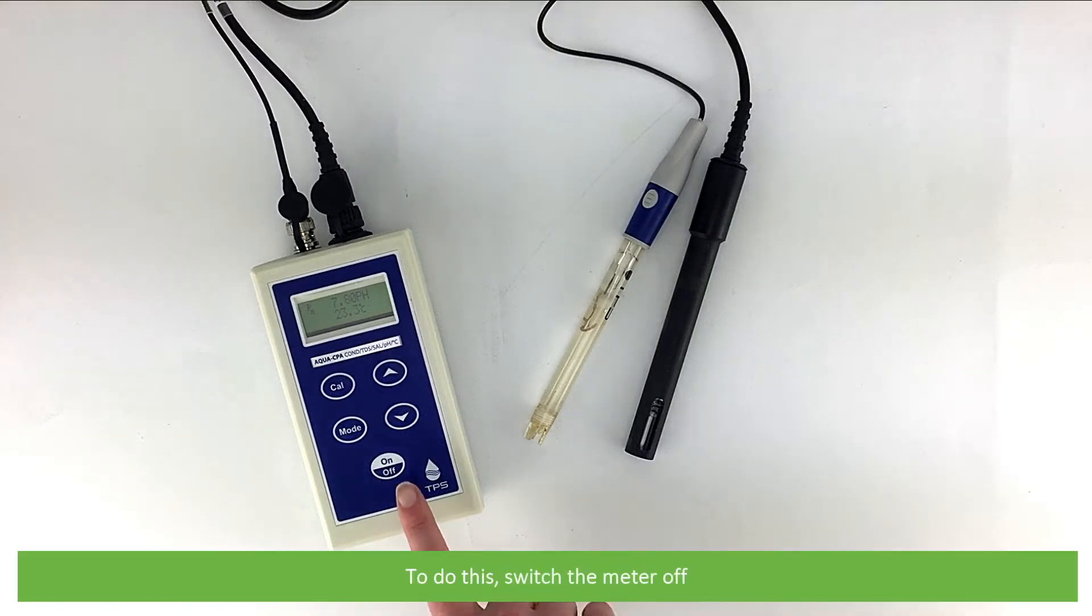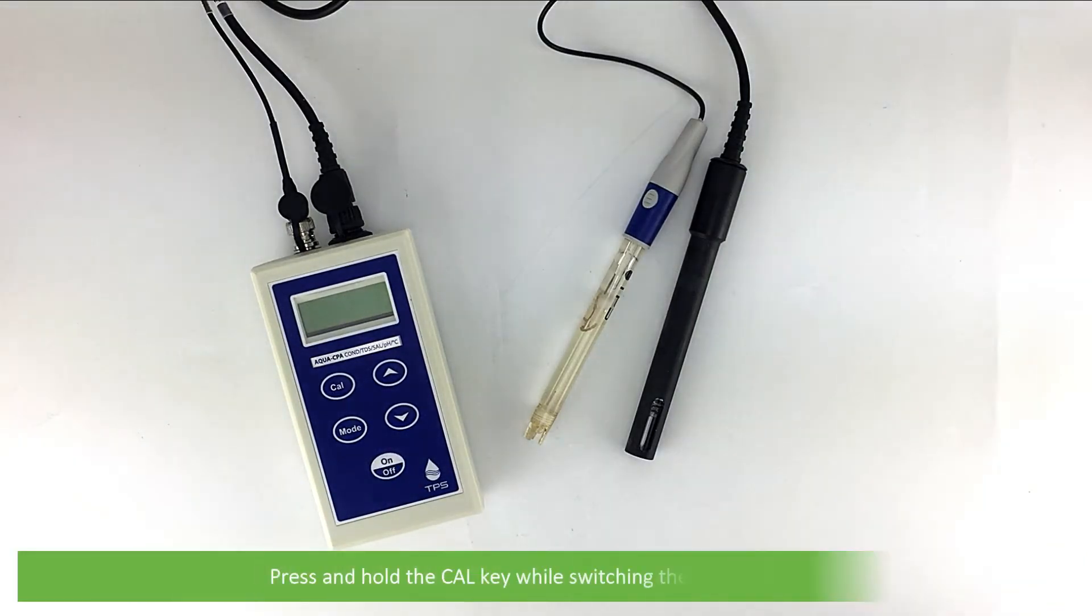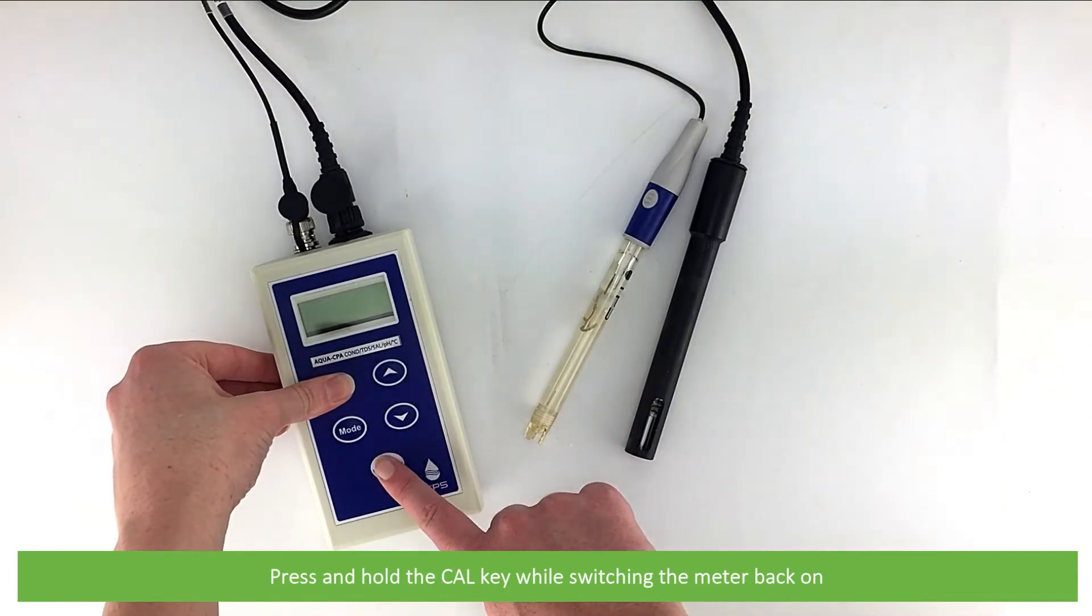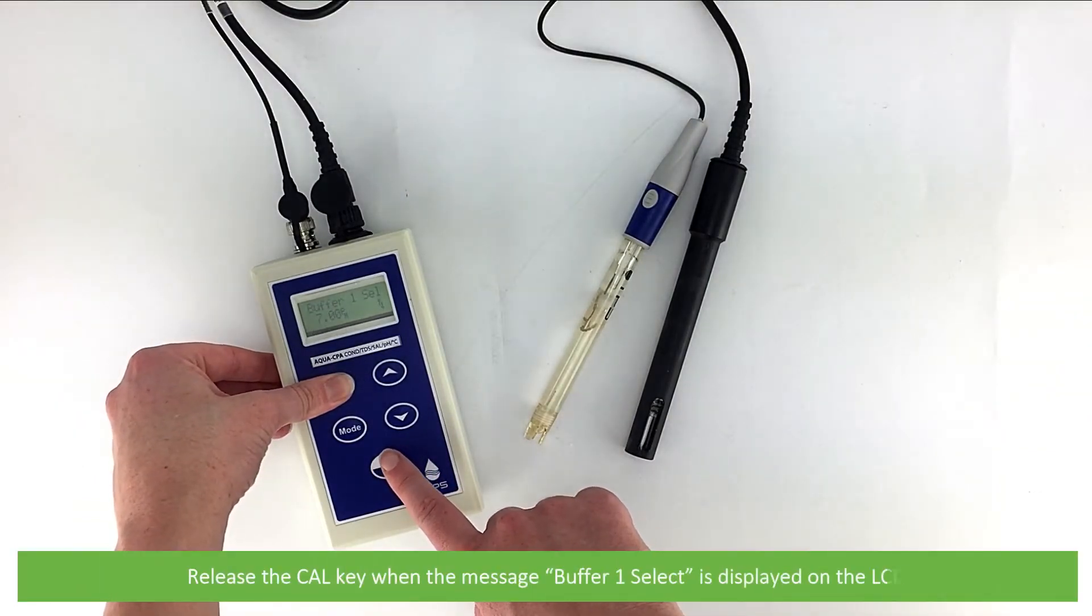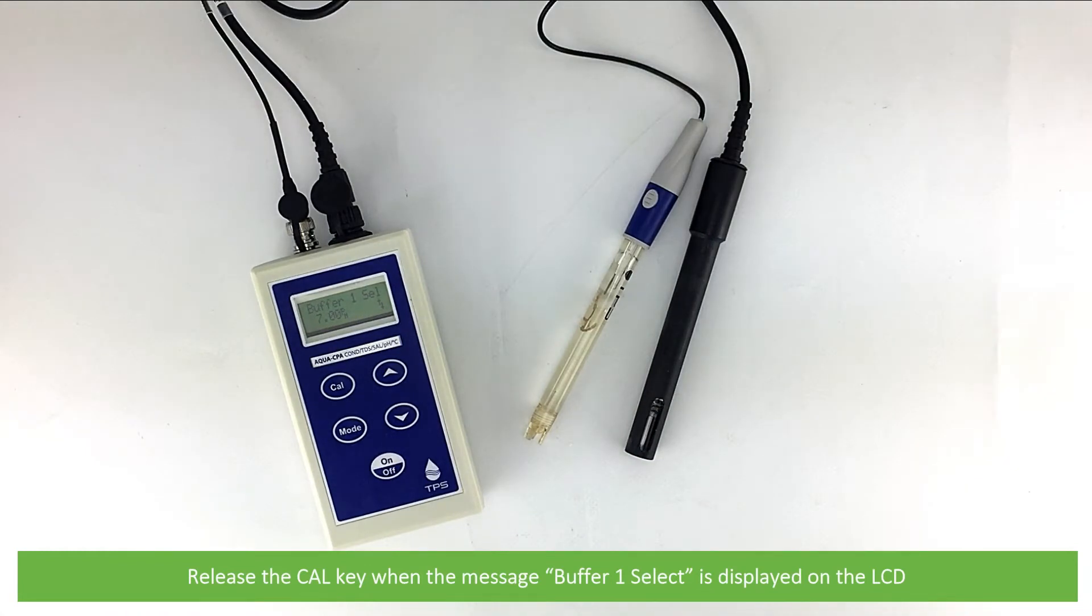To do this, switch the meter off. Press and hold the CAL key while switching the meter back on. Release the CAL key when the message buffer 1 select is displayed on the LCD.